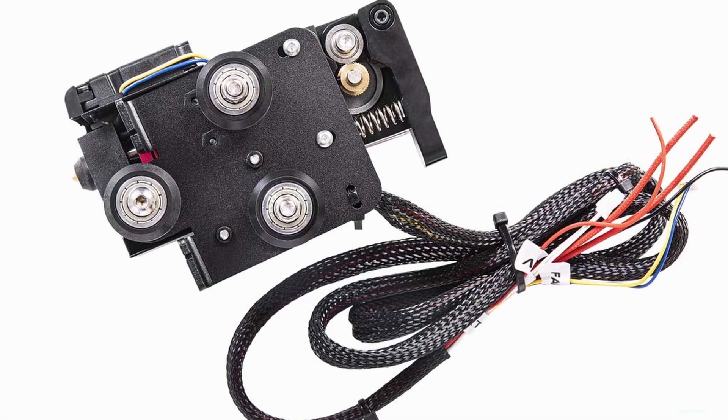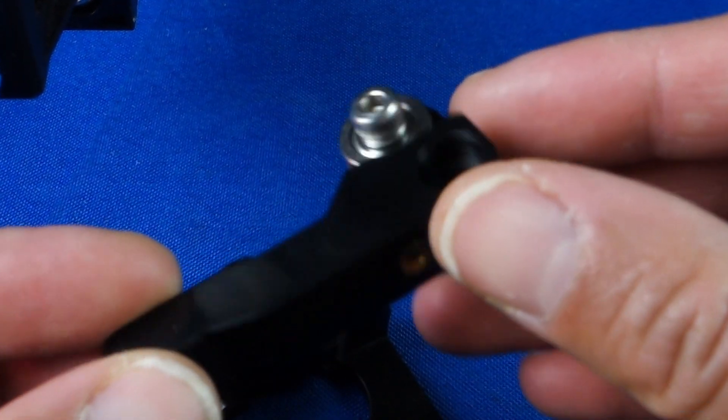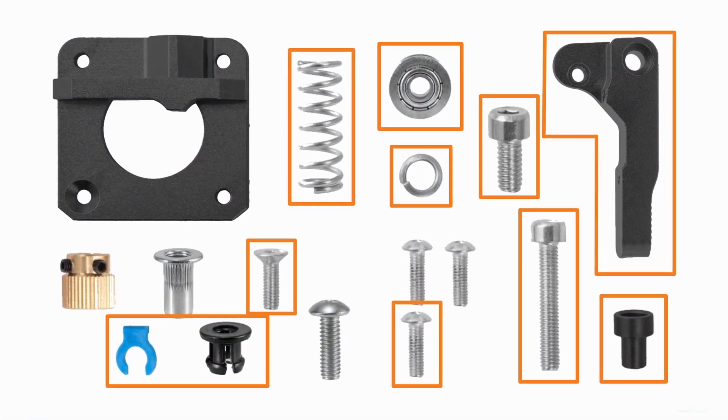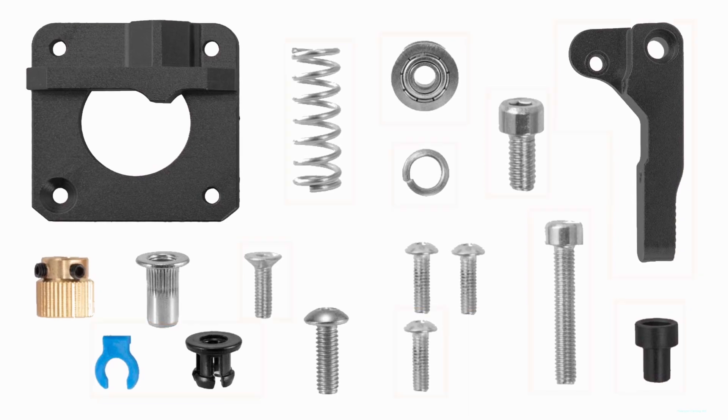The extruder feeder components that come with this kit are made from plastic, so we will be swapping those out for the metal ones. Out of this kit we will only be using these components, so you may be able to buy a cheaper version for this upgrade.